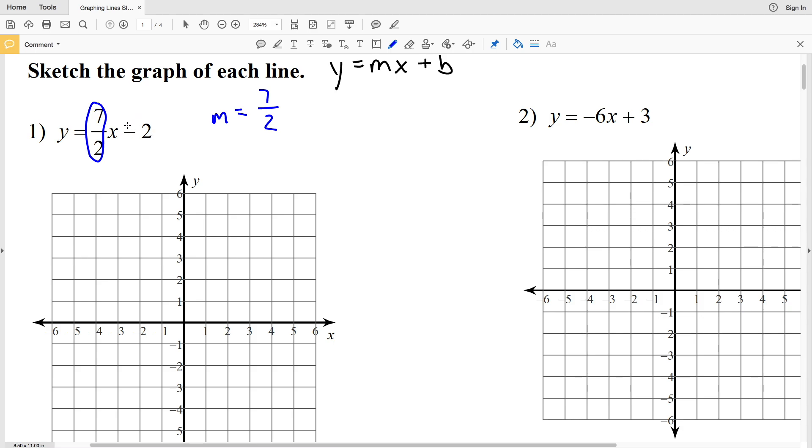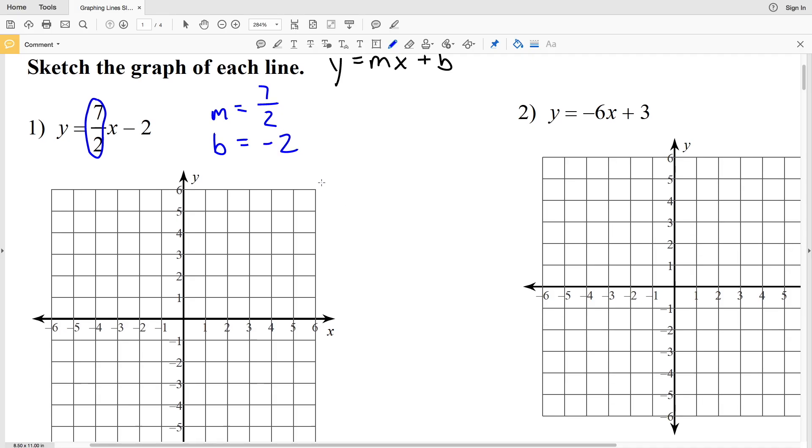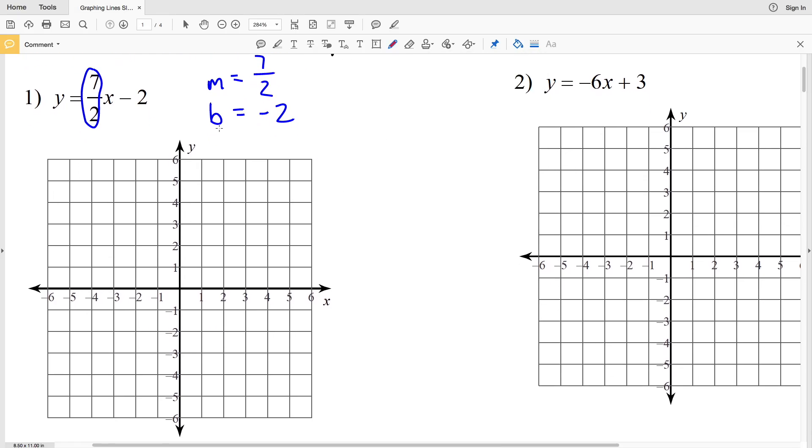The y-intercept is that b, but since this 2 is subtracted, that b is really a negative 2. So now when we go to graph this, the y-intercept occurs at negative 2, so when x is 0 that intercept is at negative 2. So we can go ahead and plot that point, and then using our slope or our rise over run, we'll be able to get to the next point.